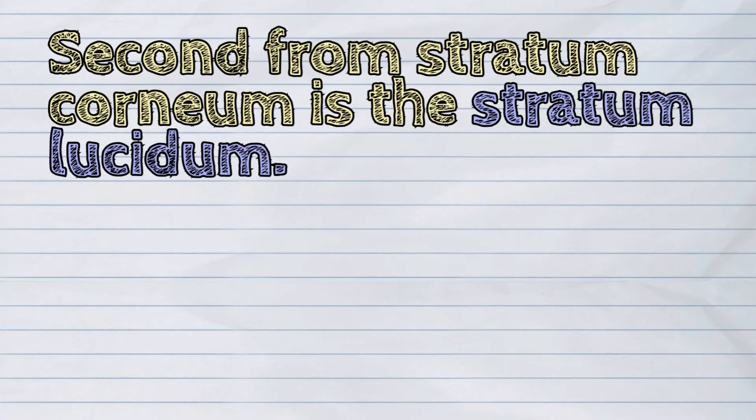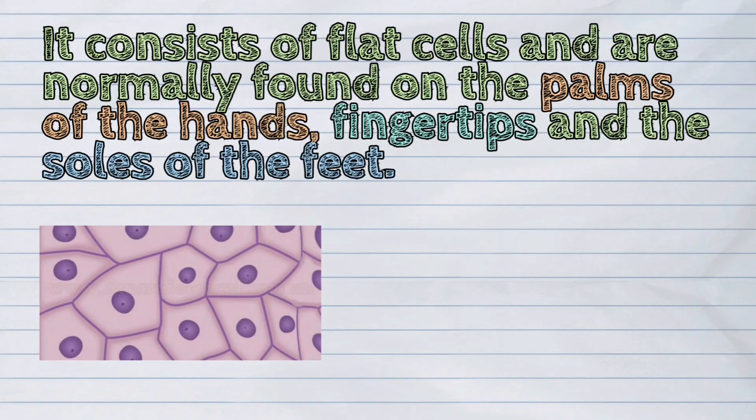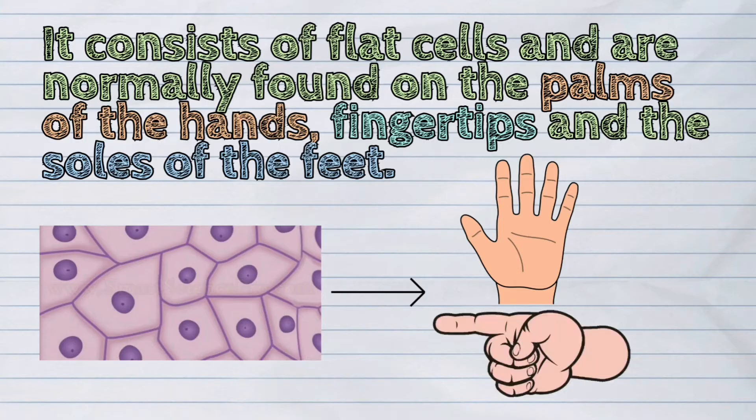Second from stratum corneum is the stratum lucidum. It consists of flat cells and are normally found on the palms of the hands, fingertips, and the soles of the feet.